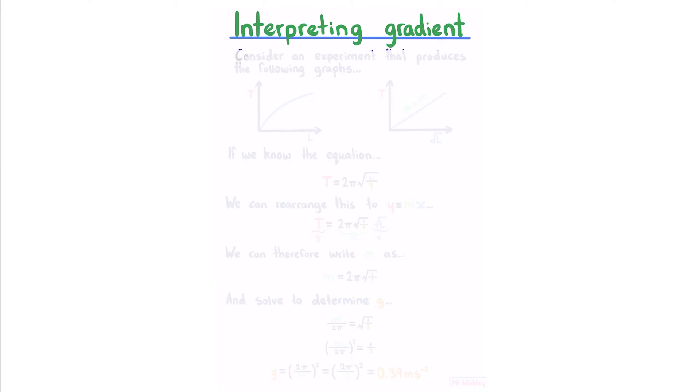Interpreting gradient. Consider an experiment that produces the following graphs. Here is our t against l, which we could identify as a square root relationship, meaning that we need to plot it against the square root of l, making it linear, and for example giving us a gradient of 10.